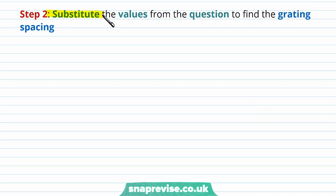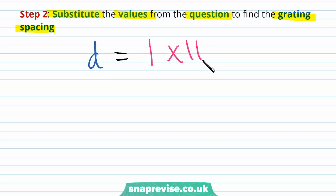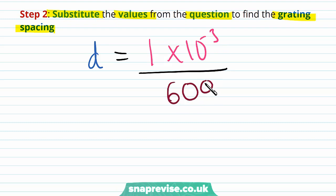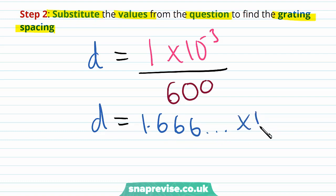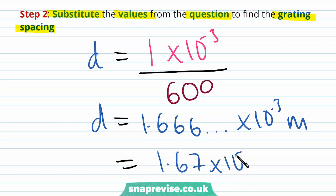Now we substitute the values. In a one millimetre section of the grating there are 600 lines, so D equals 1 millimetre — that is 1 times 10 to the minus 3 metres — divided by 600. We do 1 divided by 600 to find the distance between each individual slit. D is therefore equal to 1.667 times 10 to the minus 3 metres, which to 3 significant figures is 1.67 times 10 to the minus 3 metres.